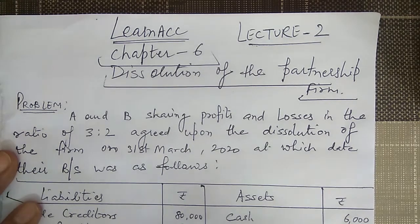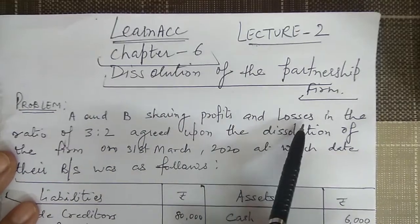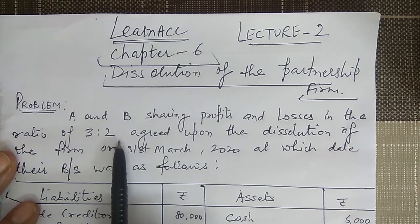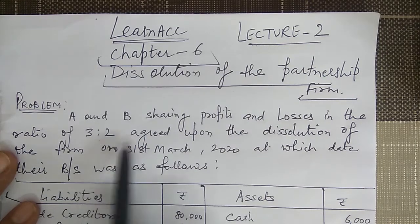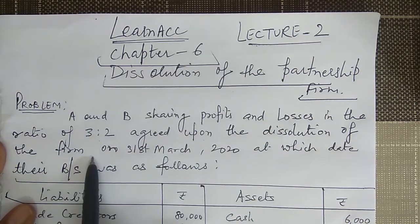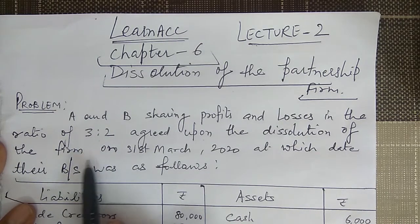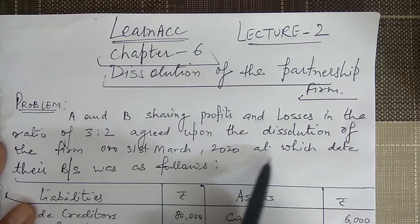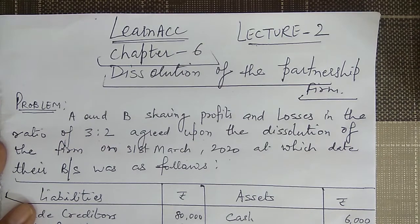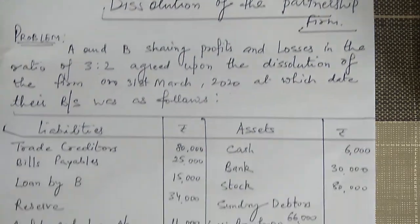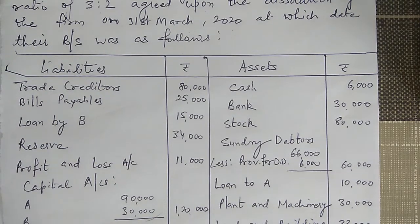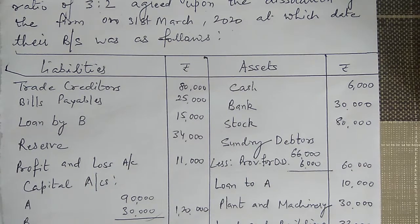I have one problem for us to solve today. A and B are sharing profits and losses in the ratio of 3:2. They mutually agreed on dissolution of the firm on 31st March 2020, at which date their balance sheet was as follows. Today we will discuss how, given a balance sheet, we show its items in ledger accounts — how to transfer assets to the realization account. If anyone has doubts about how assets and liabilities are transferred, please watch the first video once again.